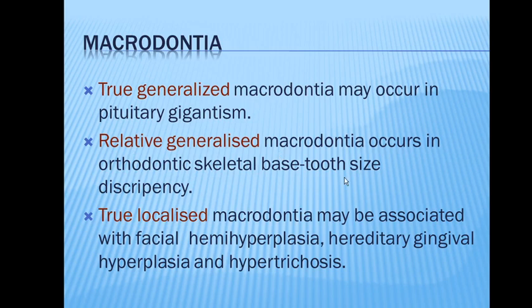Relative generalized macrodontia occurs in orthodontic skeletal base–tooth size discrepancy — a difference in the skeletal base tooth size. The third type is true localized macrodontia, which may be associated with facial hemihyperplasia, hereditary gingival hyperplasia, and hypertrichosis.